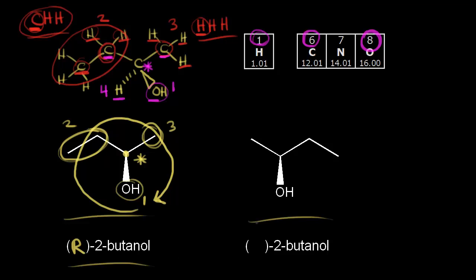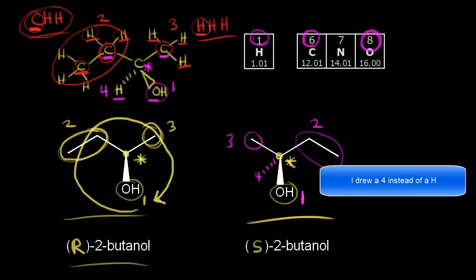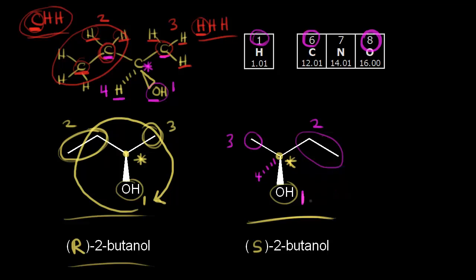If this is R-2-butanol, the mirror image must be S-2-butanol. Let's double check. At the chiral center of the mirror image, OH gets number one, the ethyl group gets number two, and the methyl group gets number three. There's a hydrogen going away from us in space, so our lowest priority group is projecting away. Going around one, two, and three, they go counterclockwise — and counterclockwise is S. So this is S-2-butanol.